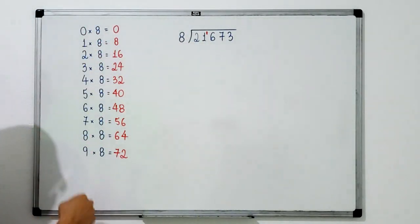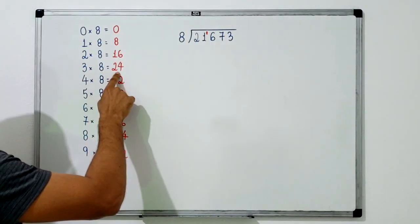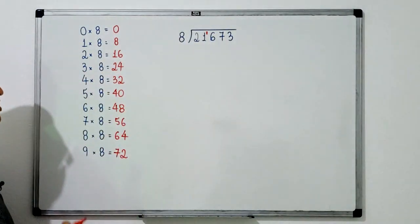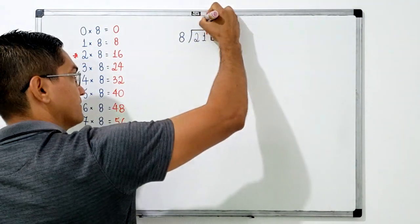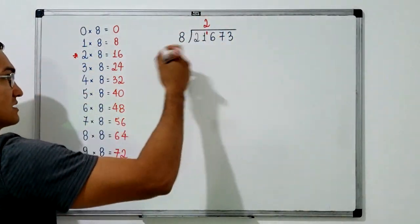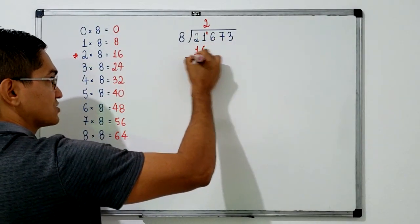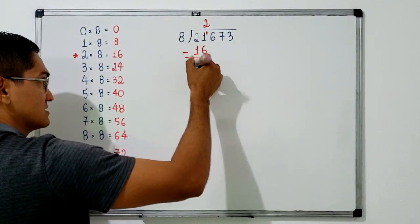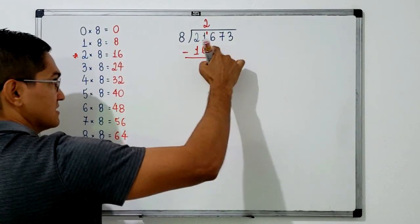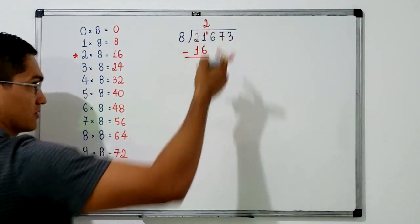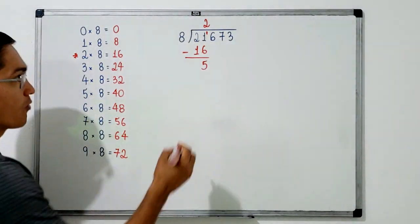Looking at the multiplication table, 3 times 8 is 24, which is too much, so we go with 2. I write 2 in the quotient. Since 2 times 8 equals 16, I write 16 here and subtract: 21 minus 16 is 5, because 16 plus 5 equals 21. After a subtraction, I always bring down the next digit.